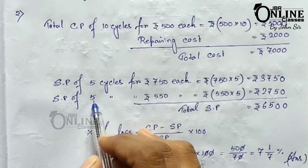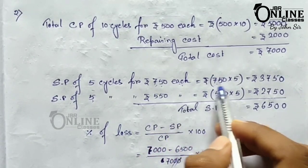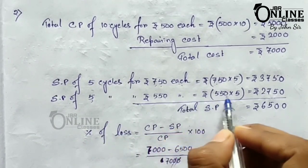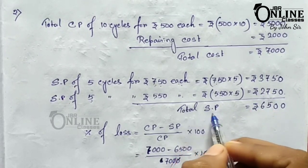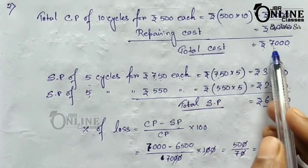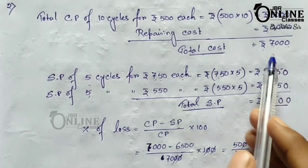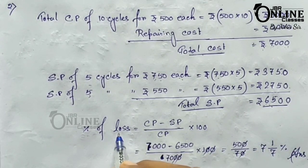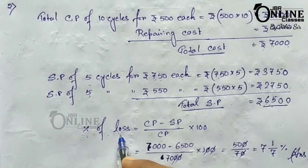The first five cycles were sold at 750 each: 750 × 5 = rupees 3750. The next five cycles were sold at 550 each: 550 × 5 = rupees 2750. So the total selling price equals 3750 + 2750 = rupees 6500. Since the total cost price is 7000 and the total SP is 6500, CP is greater than SP, so this problem will result in a loss.